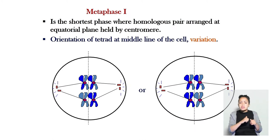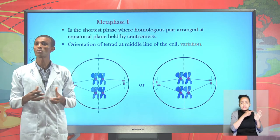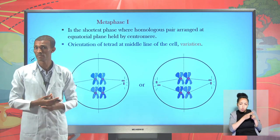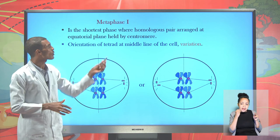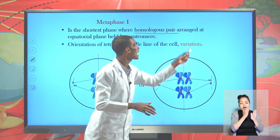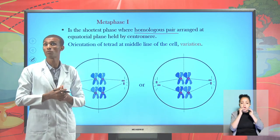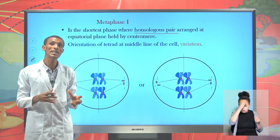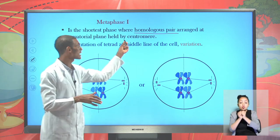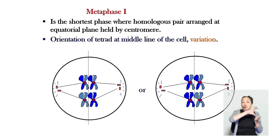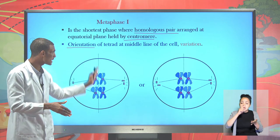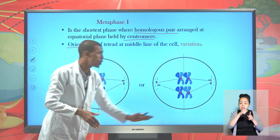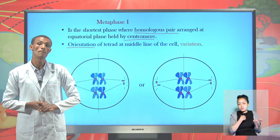Metaphase I is the phase of meiosis I considered as the shortest. During Metaphase I, homologous pairs become arranged at the equatorial plate of the cell, while the original and copy remain held together by the centromere. When the homologous pairs — tetrads — become arranged at the middle line of the cell, it is said to be Metaphase I.